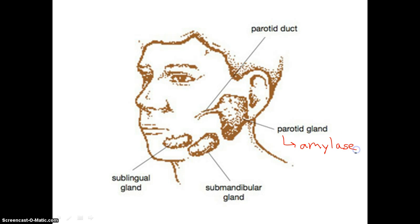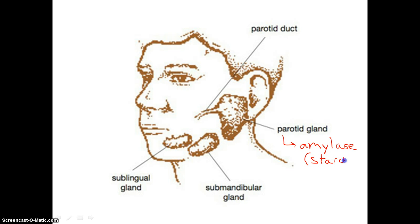And what does amylase do? It is a type of enzyme that begins the chemical breakdown of our starches that we eat. In the last video, I talked about things that are really high in starch — our breads, our pasta, our potatoes, things like that.